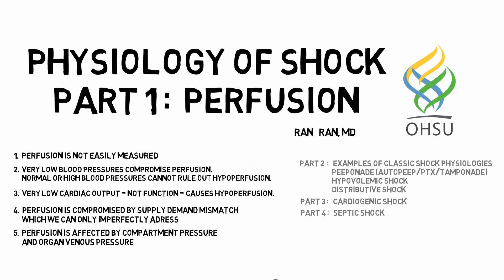Now, I know this seems like a depressing summary of things we can't measure, don't know, and can't do. But don't be discouraged — we can still treat shock well. With a strong mastery of these concepts, you can use the many surrogate markers of perfusion, cardiac output, and stress volume to illustrate the patient's physiology. Concurrently, you start to appreciate the limitations of these surrogate markers, which can sometimes lead you astray. Again, this is Ran Ran from OHSU. I hope you've enjoyed my thoughts and illustrations on perfusion. See you next time in examples of classic shock physiologies.